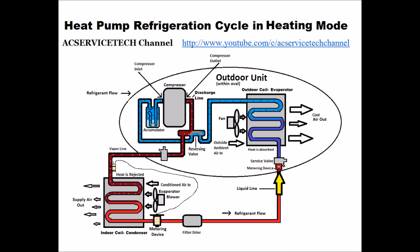It then goes through the liquid lines all the way out to the outdoor unit. The low pressure, low temperature liquid refrigerant hits the metering device right in front of the service valve and it turns into a low pressure, low temperature liquid refrigerant — actually about 80% liquid, 20% flash gas, because the refrigerant is going to want to expand to exert some pressure on this lower pressure area.